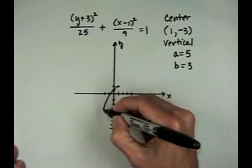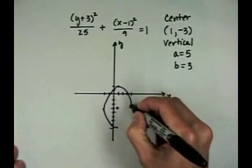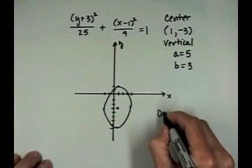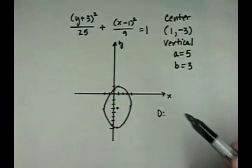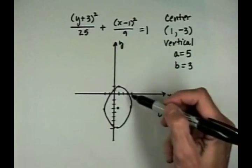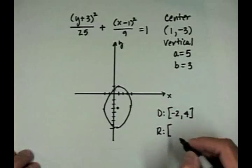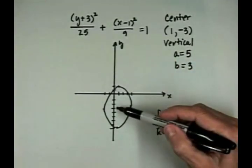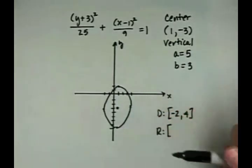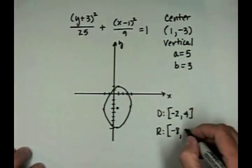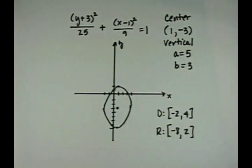Count 5 units up and down and 3 units left and right of the center, then sketch the ellipse. Now let's write down the domain and range. The domain — the x values covered left to right — goes from negative 2 to positive 4. The range — the y values from bottom to top — goes from negative 8 to positive 2.